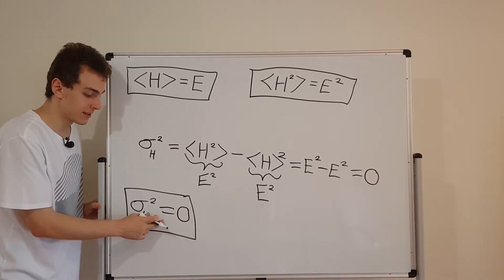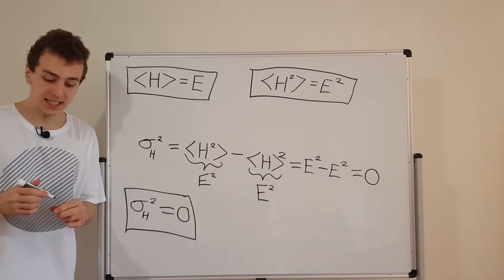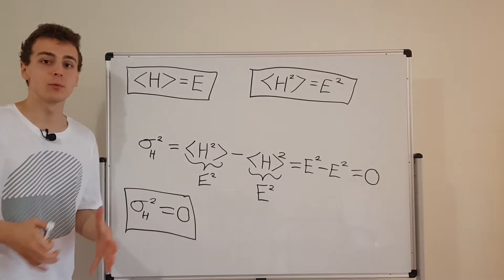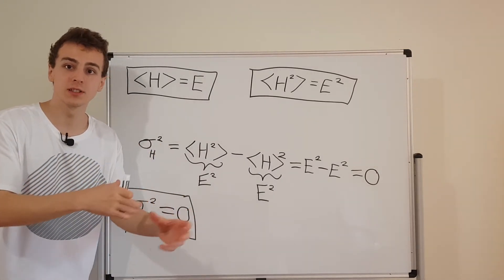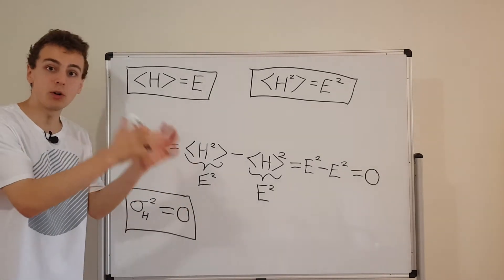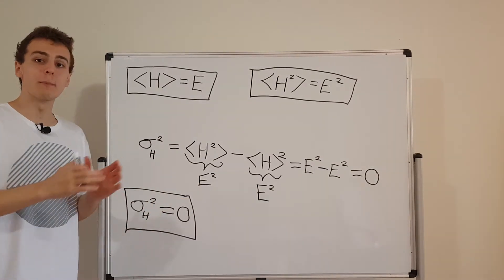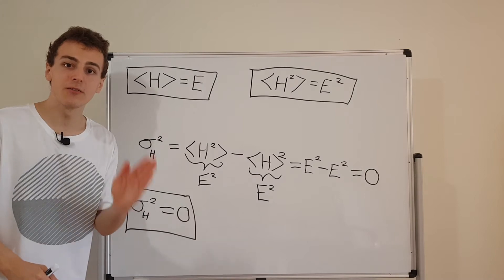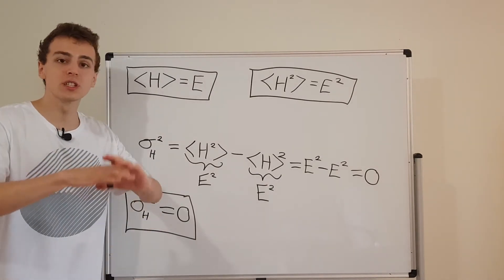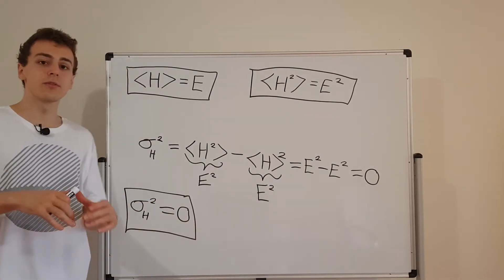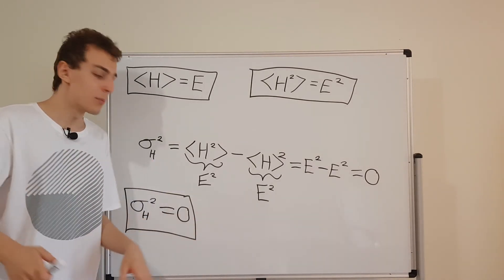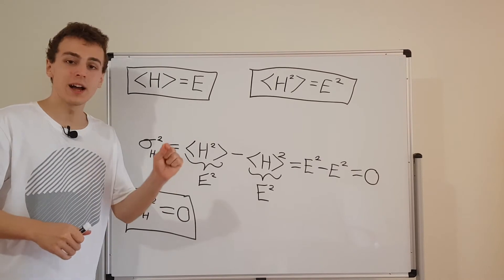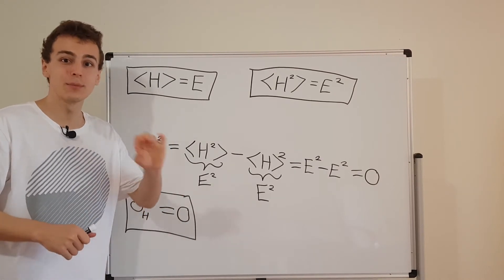What does that physically mean? If we have a system prepared in a stationary state — described by one of those separable solutions to the Schrödinger equation — and we do a measurement of the energy, we're going to keep getting the same value. There's going to be no spread. The variance is a way of quantifying the spread in the data, but if the variance is zero, there is no spread in the data. Every single value that you measure is going to be exactly the same.